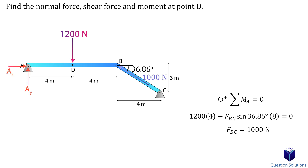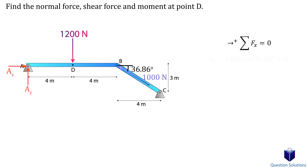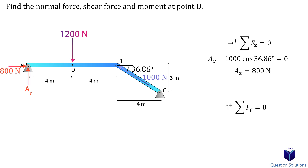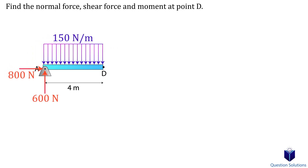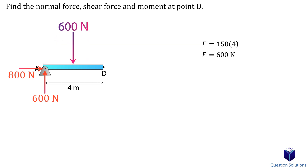We write an equation of equilibrium for the x-axis forces using the x-component of force BC to find the x-reaction at A. Then an equation of equilibrium for the y-axis forces using the resultant force and y-component of force BC to find the y-reaction at A. Now we cut the member at point D. When we do this, we need to recalculate the resultant force for just the cut portion of the distributed load. Multiplying the new length by height gives 600 newtons, placed at the centroid at 2 meters.